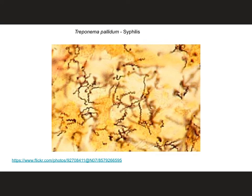This is Treponema pallidum, which is the bacteria that causes syphilis. It is a spirochete, and you can actually see in the image this sort of curly Q look, which is actually the way the bacteria looks — spiraling bacteria.